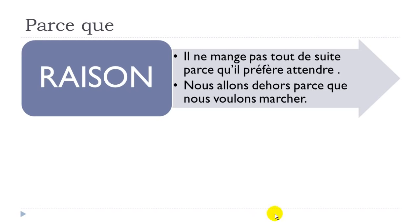Here's the first example: 'il ne mange pas tout de suite' — the negative form with 'ne' and 'pas,' 'manger' means to eat, so 'il ne mange pas' means he doesn't eat. 'Tout de suite' means right now. 'Parce qu'il préfère attendre' — because he prefers to wait. 'Préférer' means to prefer, and 'attendre' is to wait — the second verb stays at the infinitive form. So: 'il ne mange pas tout de suite parce qu'il préfère attendre.'